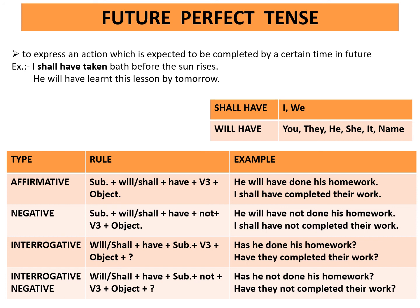Interrogative negative rule: will or shall plus have plus subject plus not plus third form of the verb plus object plus question mark. Example: Has he not done his homework? Have they not completed their work?